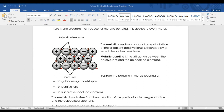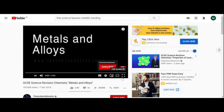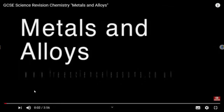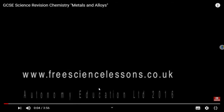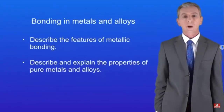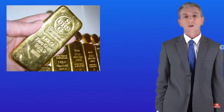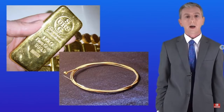I'm going to go to my Free Science Lessons person and let him explain it to you. Welcome back to freesciencelessons.co.uk. By the end of this video you should be able to describe the features of metallic bonding, and describe and explain the properties of pure metals and alloys. Metals are critically important in chemistry - here is a gold bar which is essentially pure gold, and also a guitar string which is an alloy. We'll be looking at what's meant by an alloy later in this video.